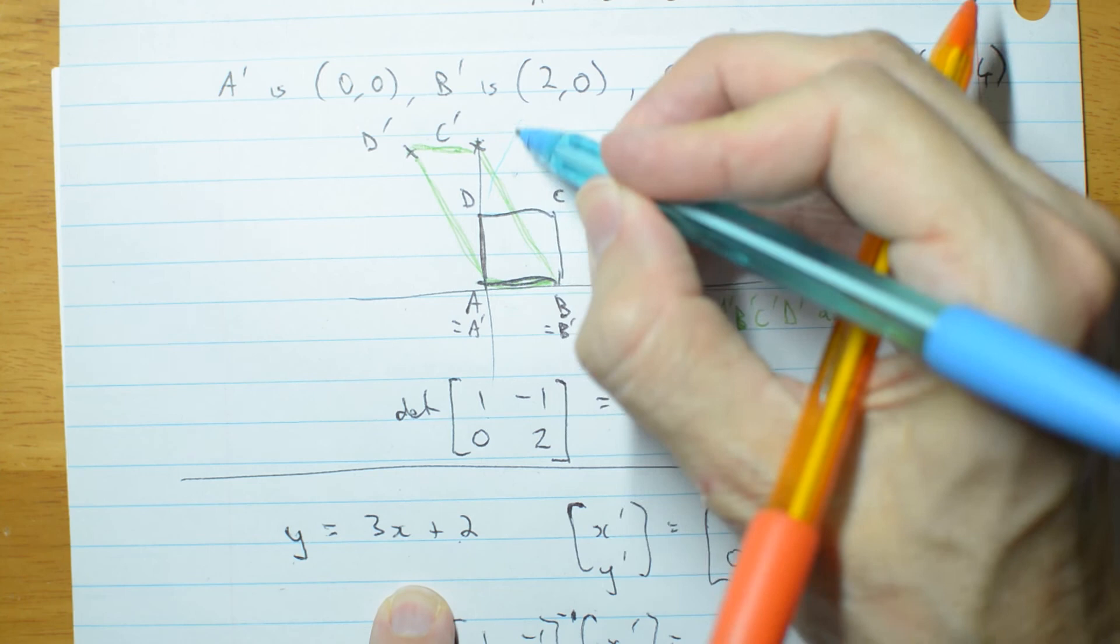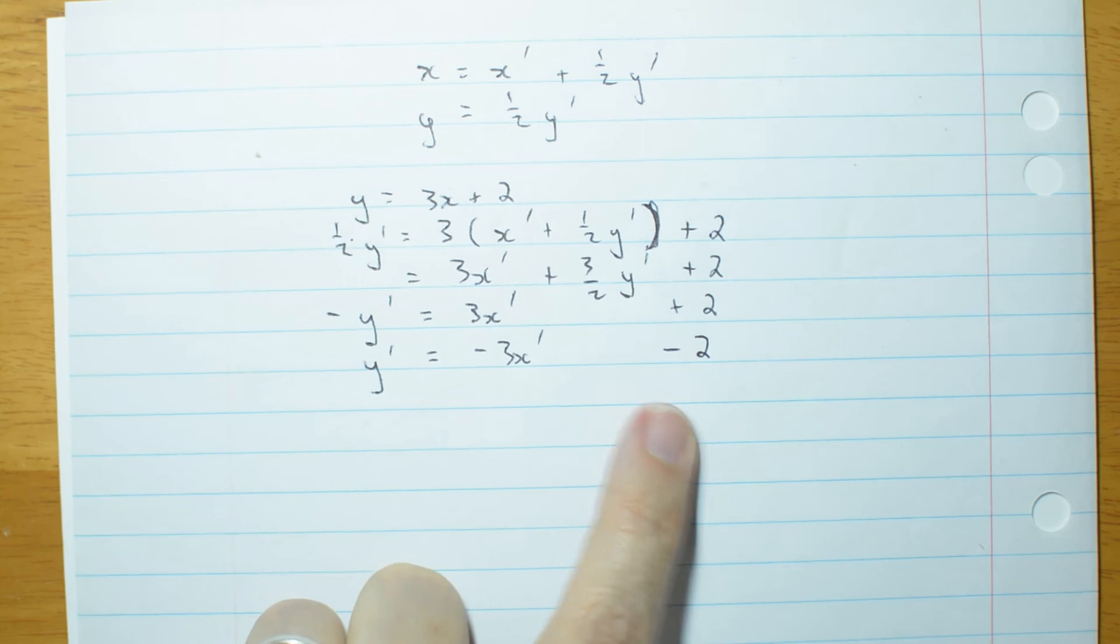And it turned it into, if I can get my paper to move, negative 3x, take 2, which is more like this.